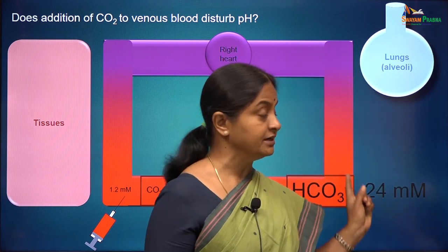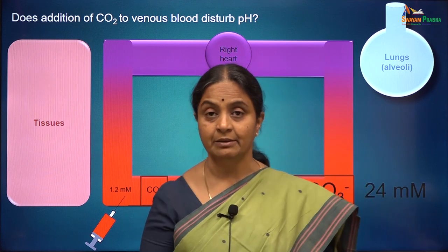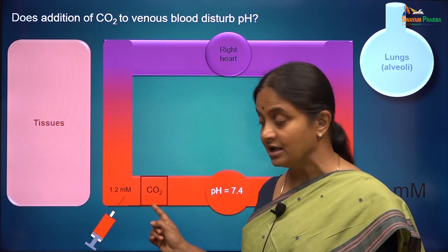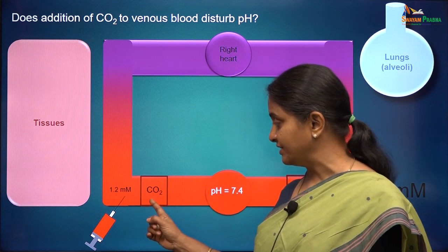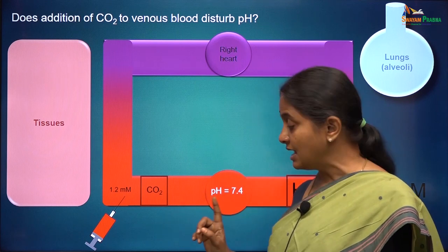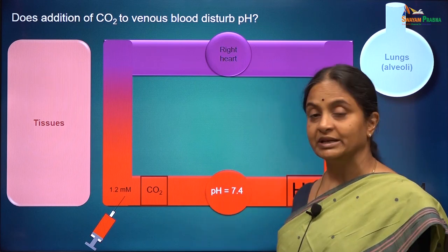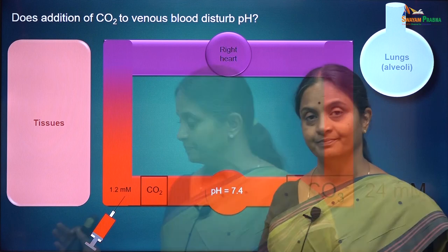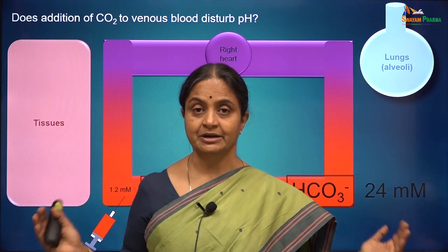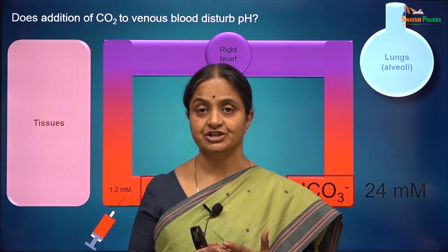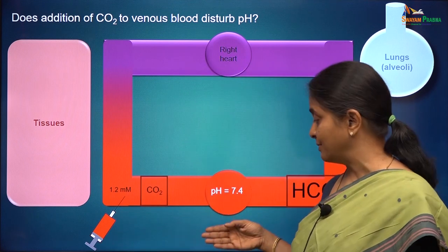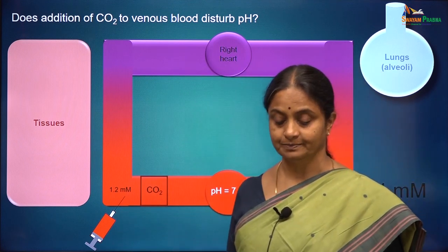The lungs titrate the amount of carbon dioxide that needs to enter arterial blood so as to maintain the ratio of carbon dioxide to bicarbonate at 20, and therefore you get a pH of 7.4. So carbon dioxide and bicarbonate in the right amounts balance each other to maintain the pH of arterial plasma at 7.4.